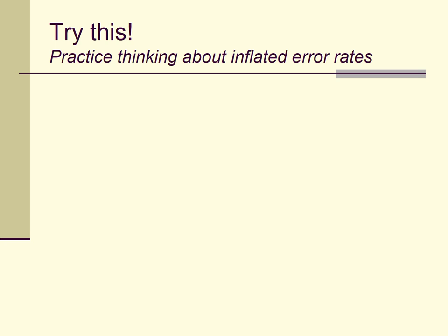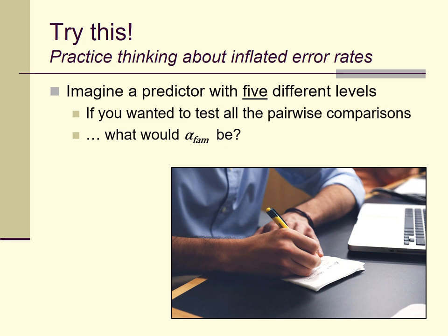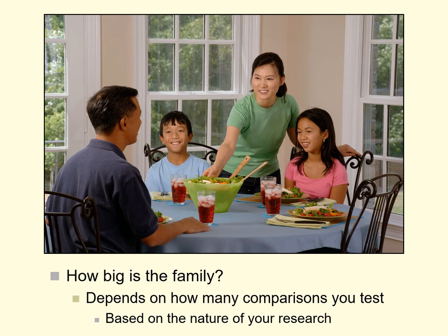Here's a chance to practice: imagine you have a predictor variable with five different levels and you want to test all pairwise comparisons — not grouped comparisons, just pairwise. What would the family-wise error rate be for that family of tests? You may also be wondering: how big is a family of tests? You could have three pairwise comparisons, or more if you include grouped comparisons. How do you decide how big your family will be, and as a consequence, how large the family-wise type 1 error rate will be?